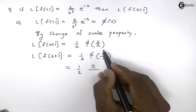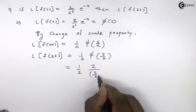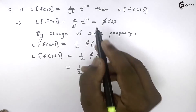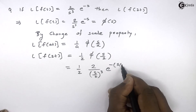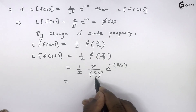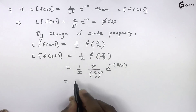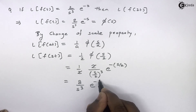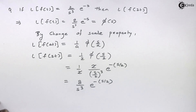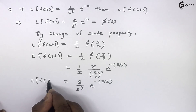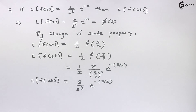Now s is replaced by s by 2, giving us s by 2 the whole cubed, times e raised to minus s by 2. The 2 in the denominator of s/2 and the factor of 2 cancel, and 2 cubed equals 8 goes into the numerator, giving the final answer 8 upon s cubed times e raised to minus s by 2. This is the Laplace transform of f(2t) using the change of scale property.